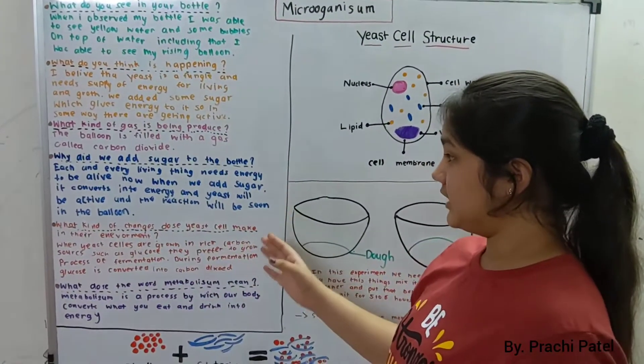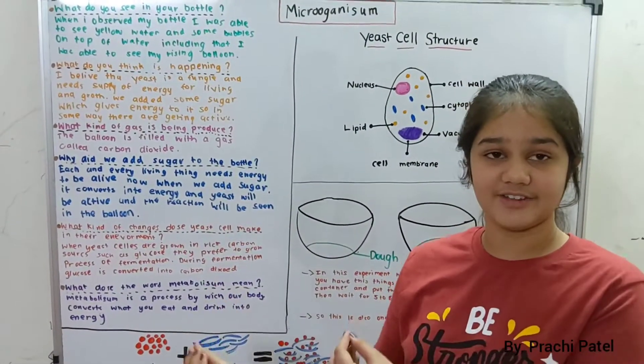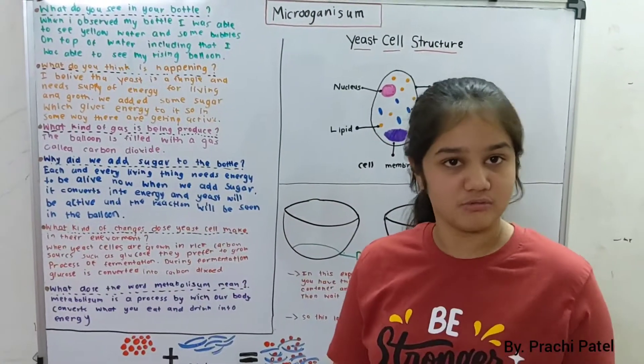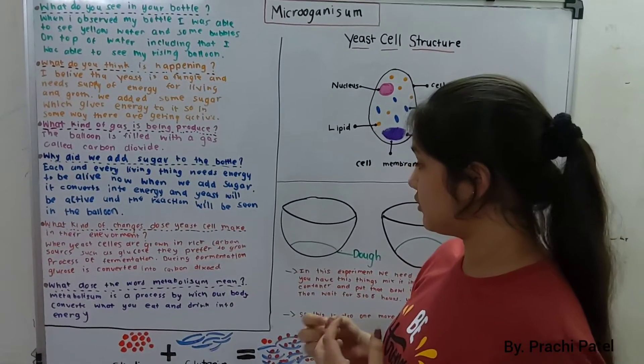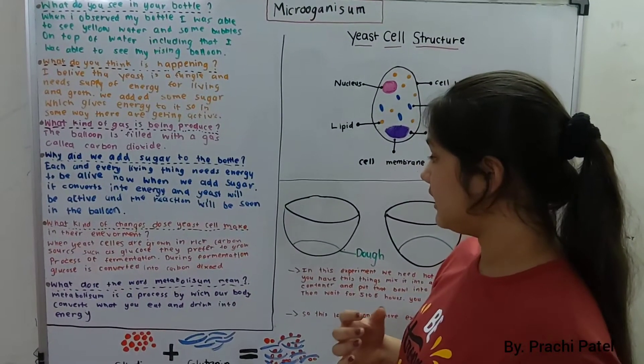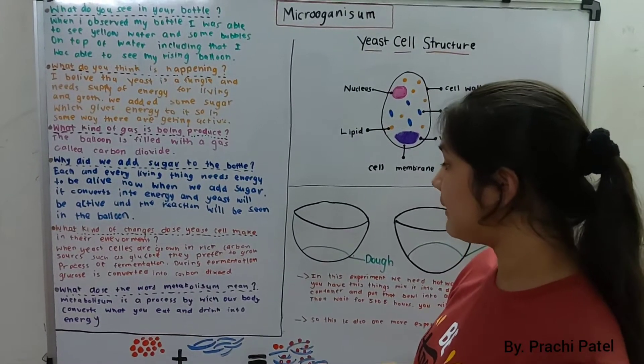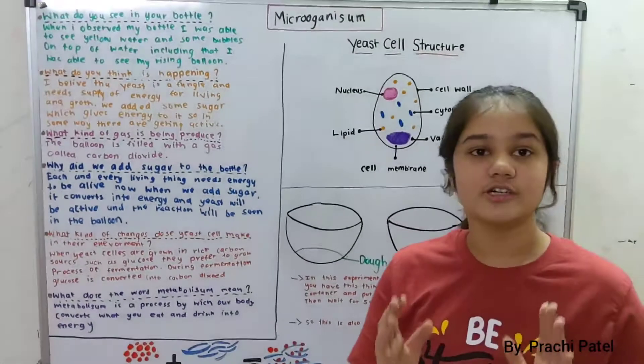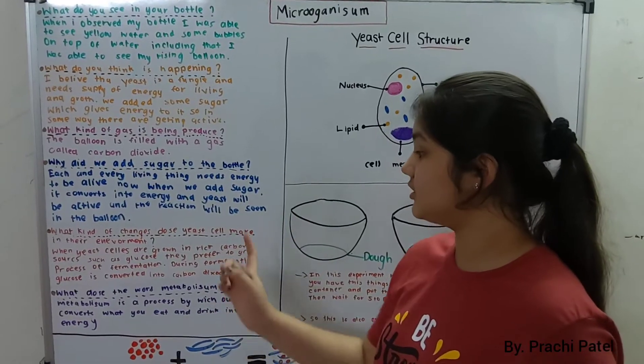What kind of changes does yeast cells make in their environment? Each and every living thing has a cell, so even yeast has its own cell. When yeast cells are grown, they are in rich carbon dioxide sources such as glucose. They prefer to grow by a process of fermentation. Have you heard of the word fermentation?